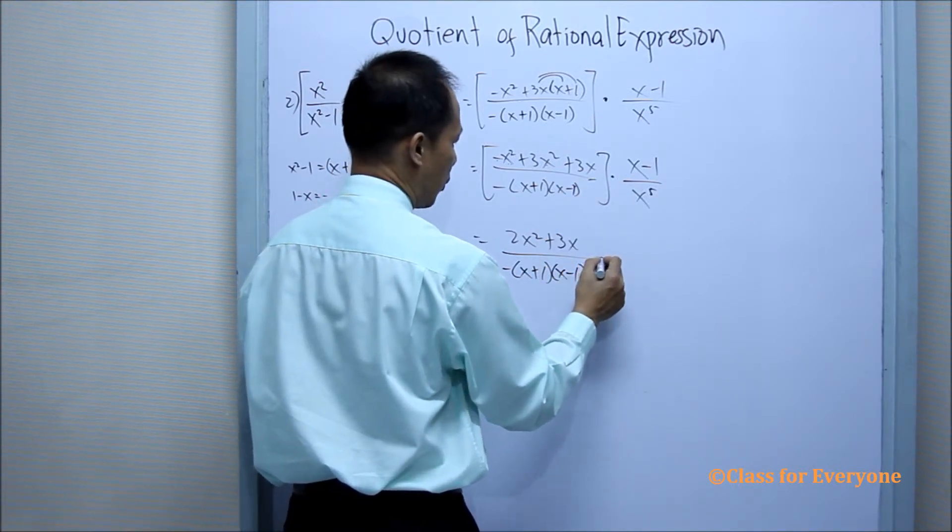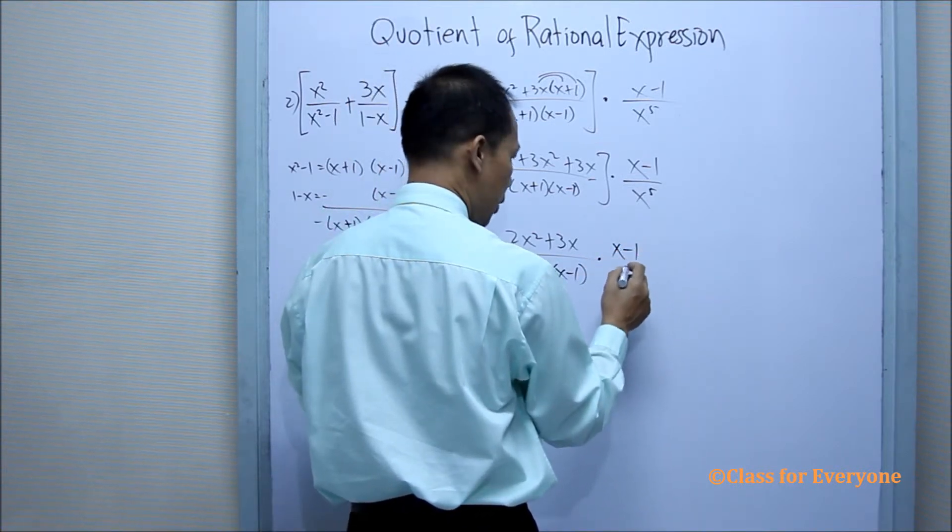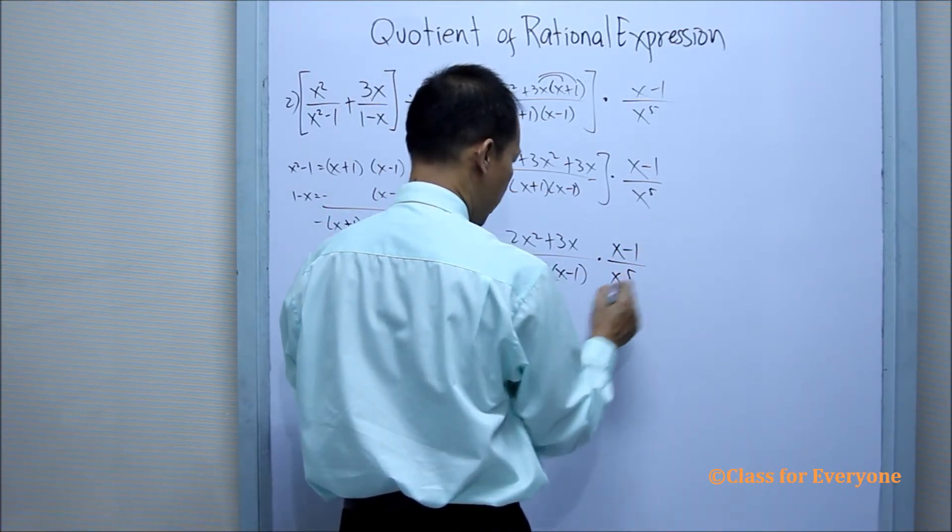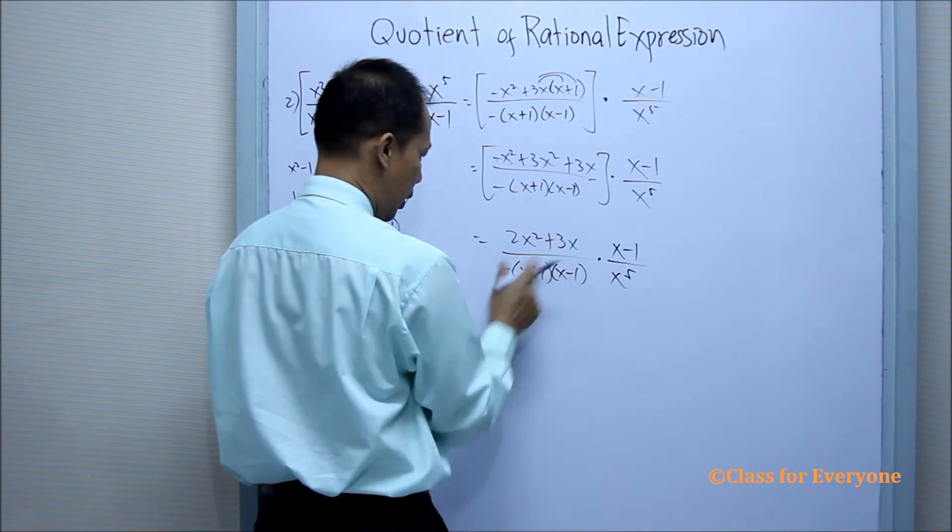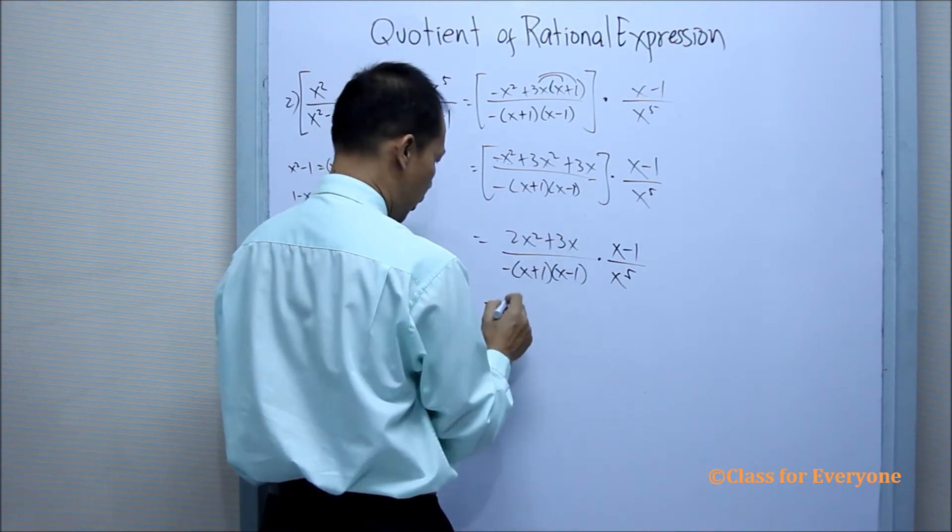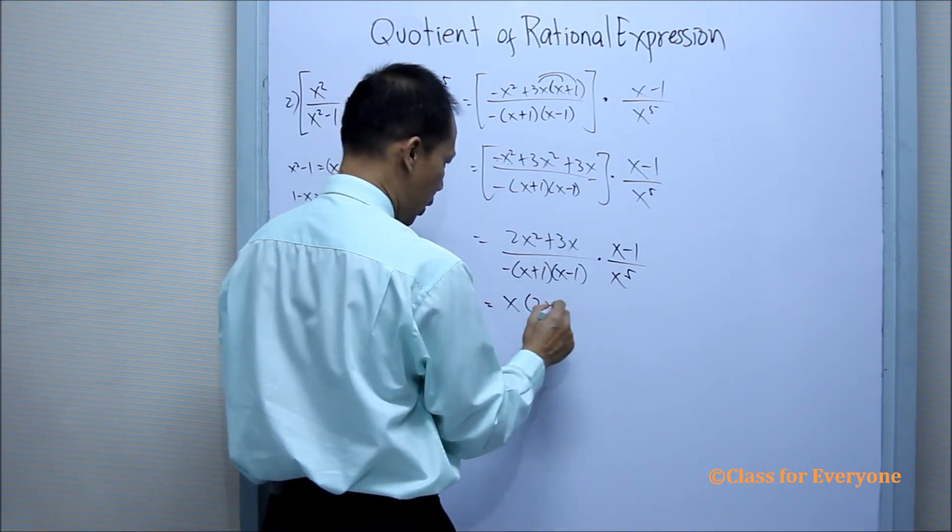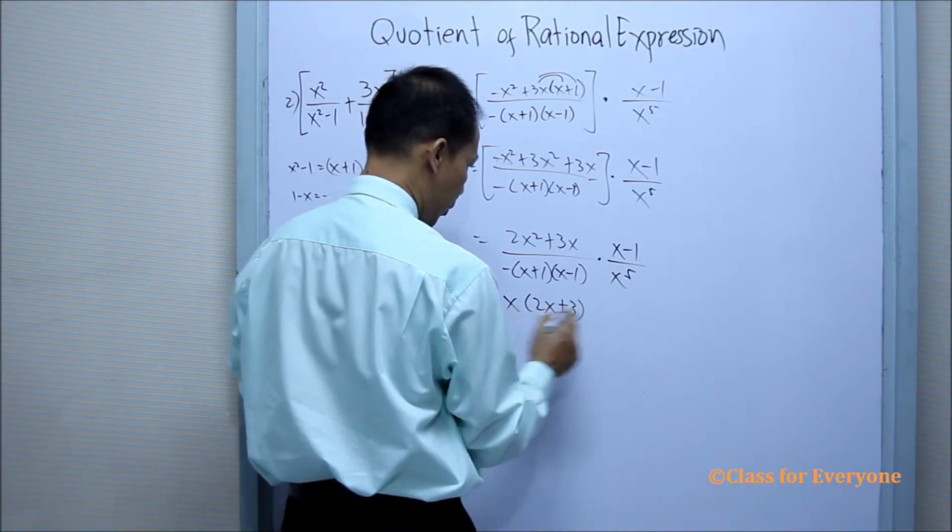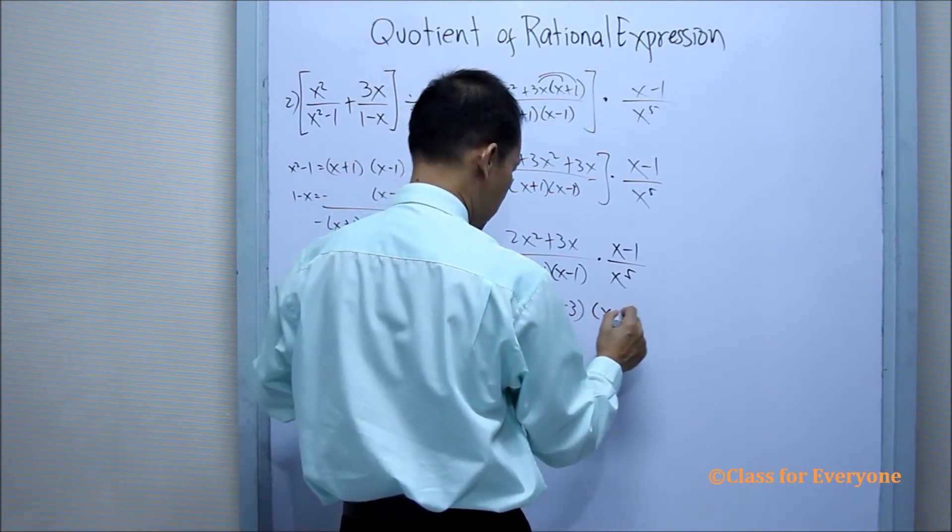We can still factor this. There is a common factor of x. So we have 2x plus 3 times x minus 1.